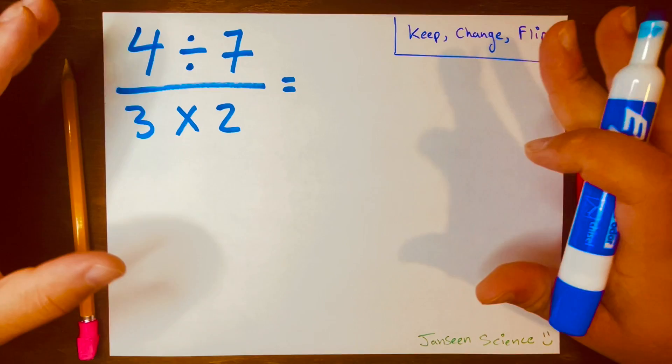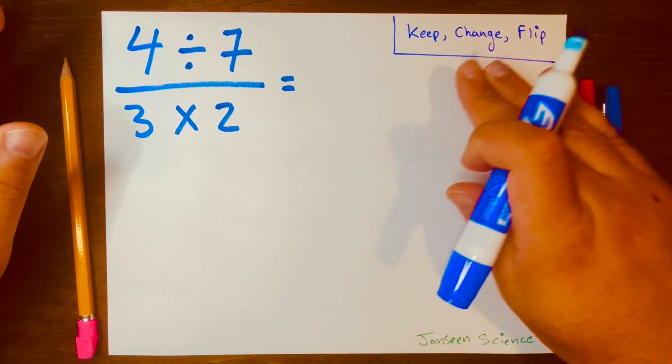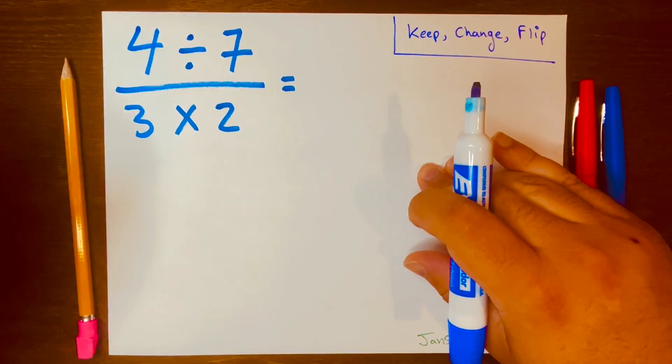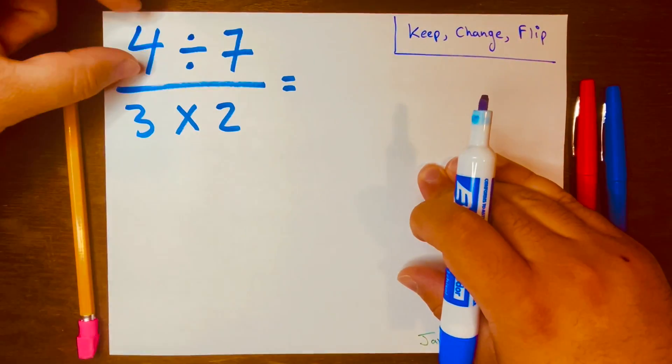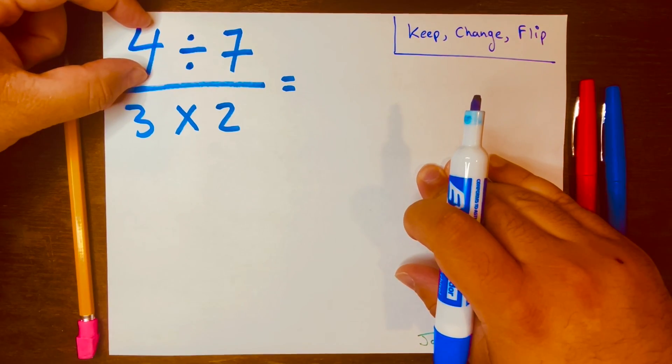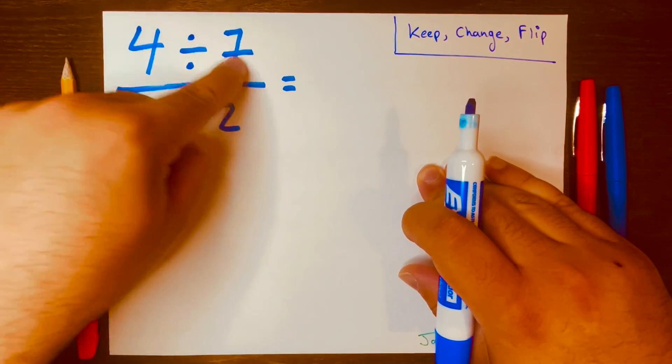The first thing I need to do is apply the keep, change, flip method to this problem: 4 divided by 7 divided by 3 times 2. We keep the first part that is above the fraction bar, 4 divided by 7.